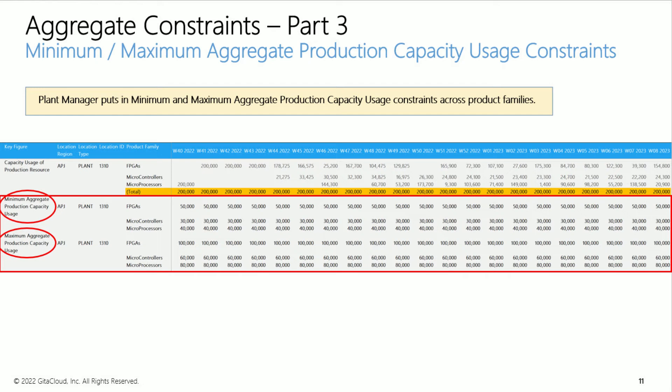The plant manager decides to constrain the production capacity available to each product family. See the minimum and maximum aggregate production capacity usage constraints. The ranges are: 50,000 to 100,000 units for FPGAs, 60,000 to 80,000 units for microprocessors, and 30,000 to 60,000 units for microcontrollers. This pattern is the same across weeks, although it could differ. The Optimizer can plan any combination of finished good demands across products and customers, but must respect these ranges at the aggregate product family level.